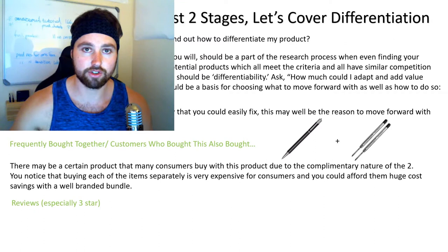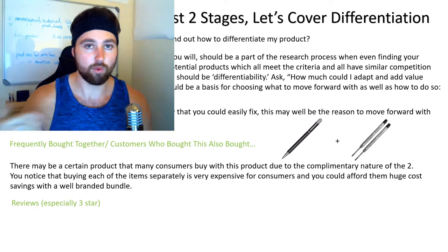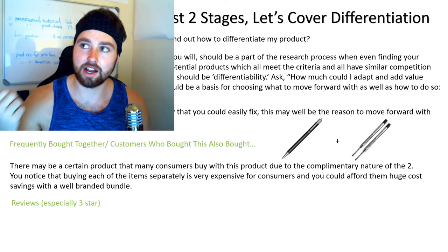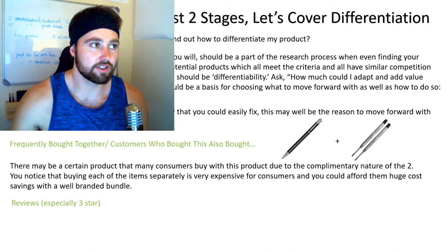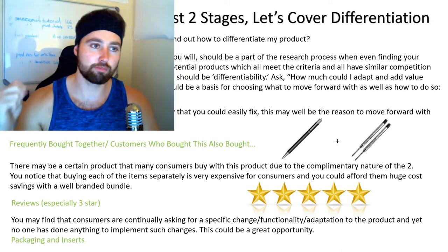Number three is your reviews — especially three and four star reviews, because those are often going to be more honest than, say, one star reviews where people might just be having a bad day. Look at your credible reviews where they're saying: 'I love this product, but I wish it didn't have this.' 'I love the product, I wish it came in this color.' 'I love the product, but the side edge digs into my skin.' That's your cue on what you can change about your product and how you can make your version far, far better.